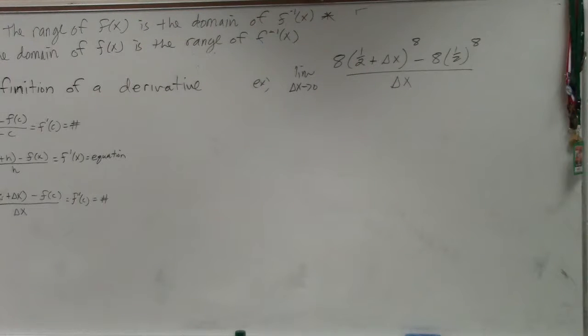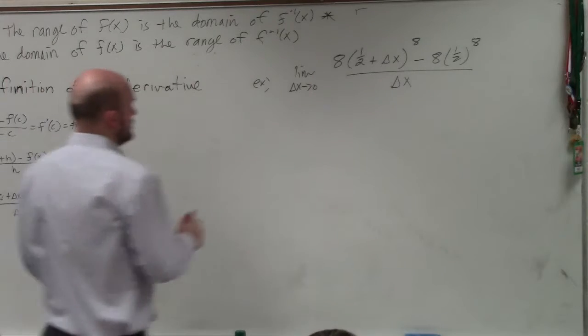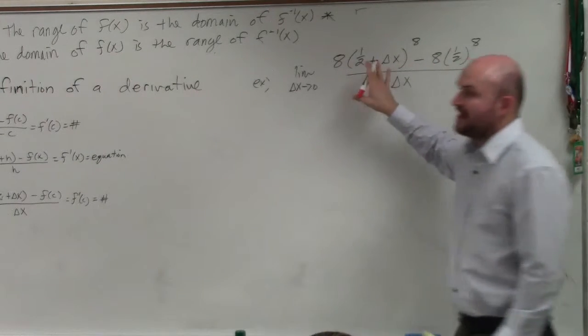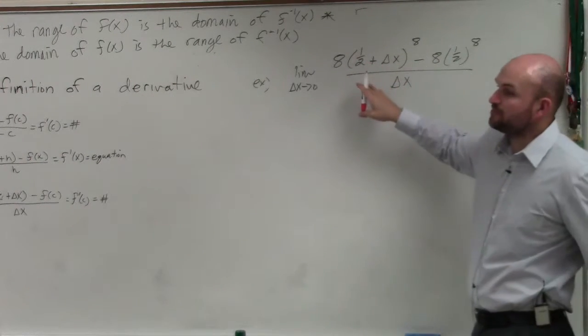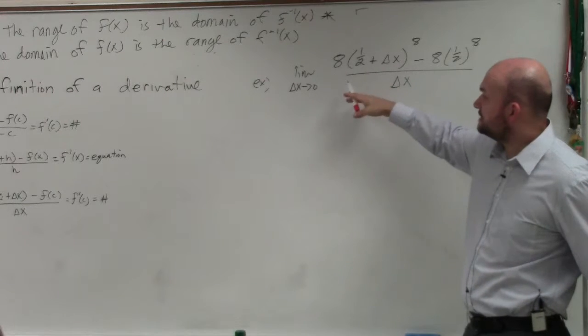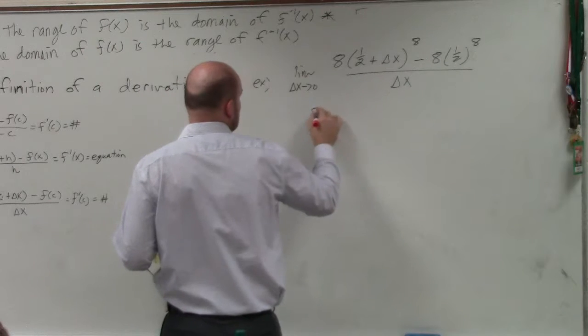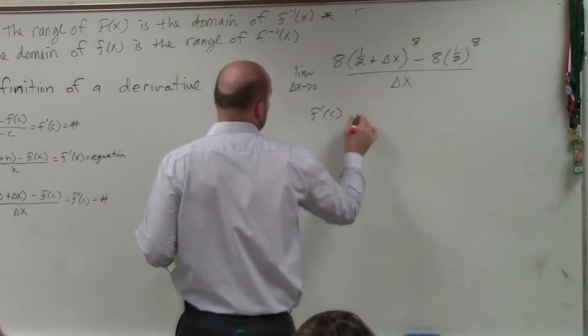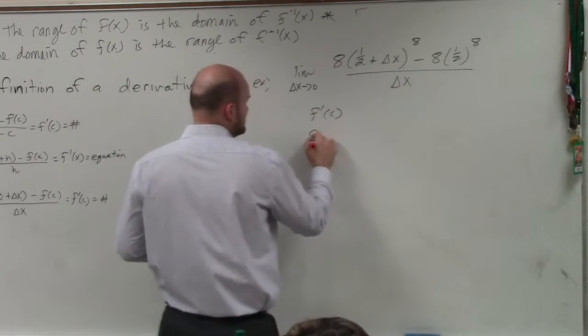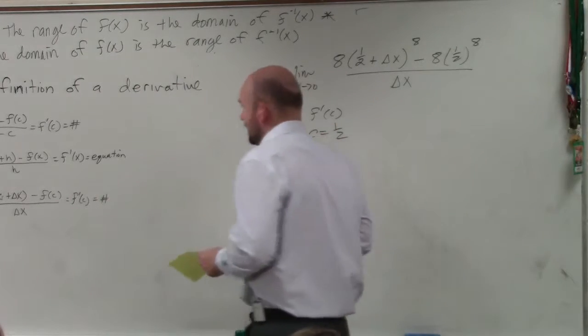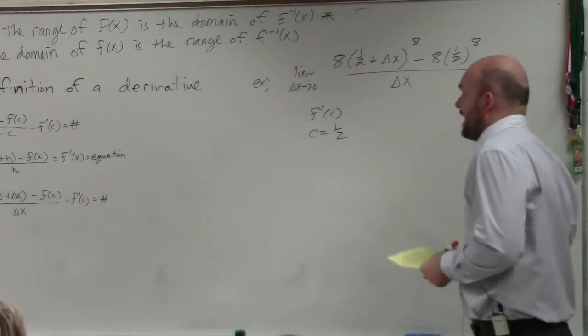This limit definition we're going to be getting. We're taking in a value of c after f prime of c is going to, or c is going to 1 half. So basically what that is mentioned to us is f prime of c, where c is going to equal, c is equal to 1 half.